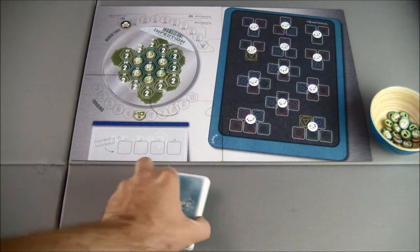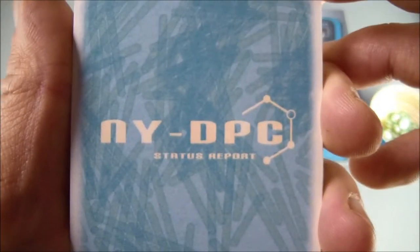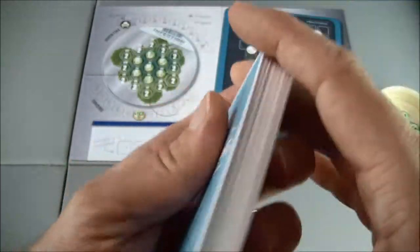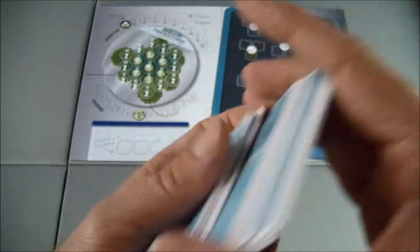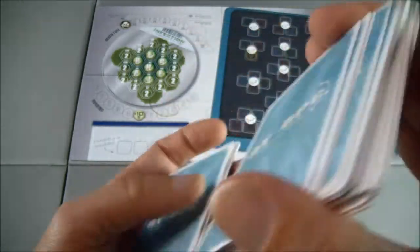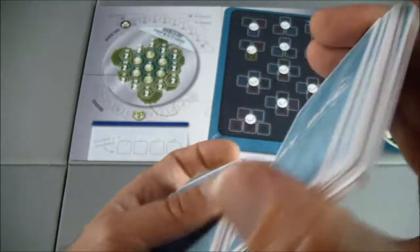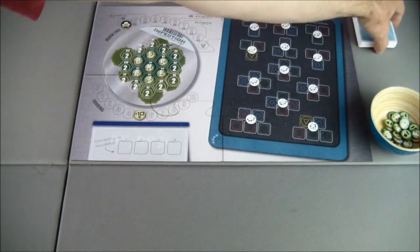Next we're going to take our status report deck. You can see there's several status report cards. Give this a nice good shuffle, mix them up real good, then we'll place this off to the side to create our draw pile for our status report cards.